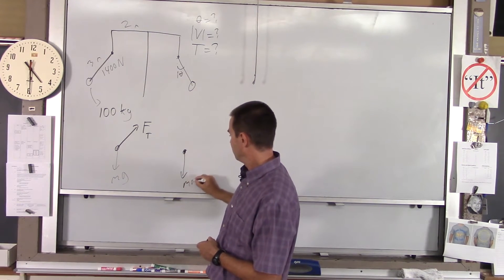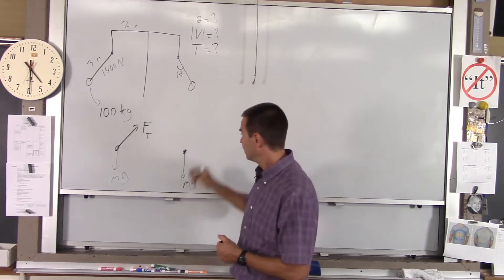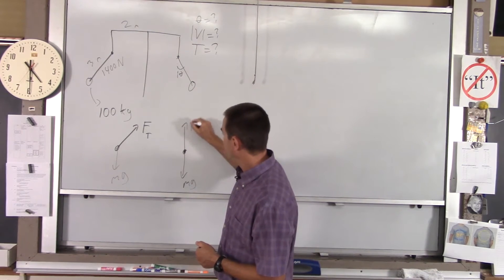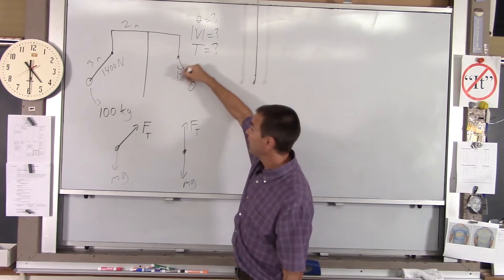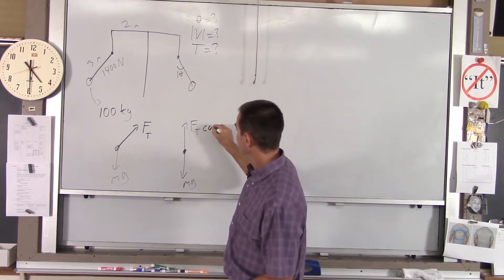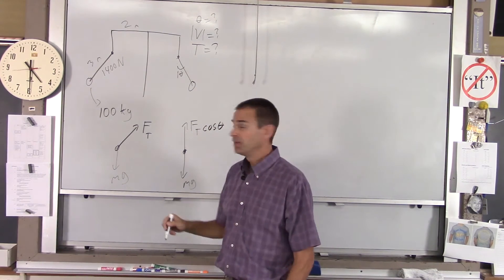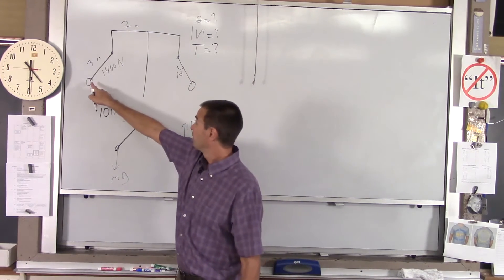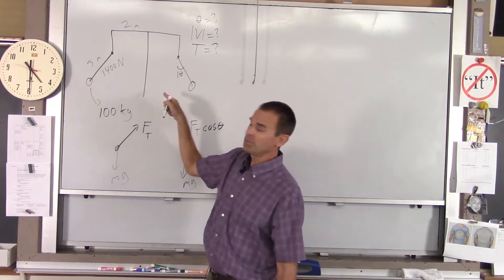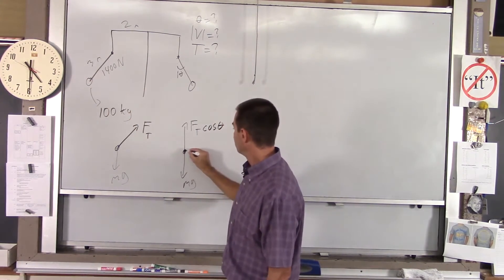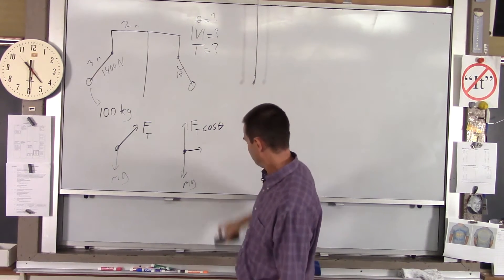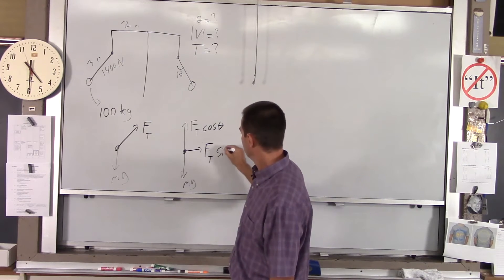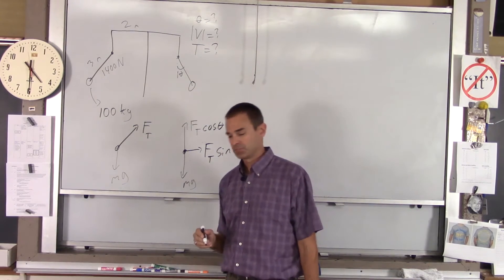Well, mg is already perpendicular to that. You've got a component of tension that points up. That would be Ft. You want the adjacent leg to that triangle. So it would be Ft cosine of theta. And then if I look at this guy here, the tension is also pulling them in, holding them in the circle. So that would be Ft sine of theta.